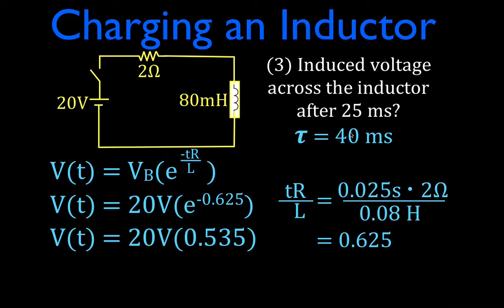Remember, after one time constant, this is less than one time constant, after one time constant, the voltage across the inductor is reduced to 36.8 percent. Well, this is less than one time constant, hasn't been reduced to 36.8 percent yet. So that looks good, makes sense, and therefore we multiply that and we get that the voltage with respect to time after 25 milliseconds will be 10.7 volts. All right, clear.